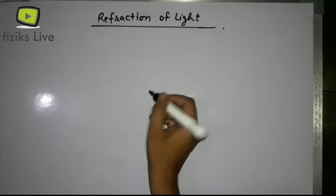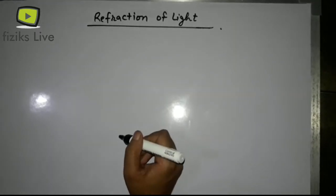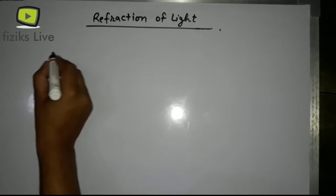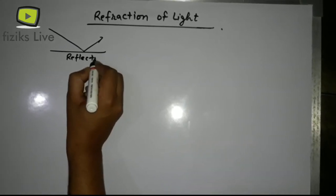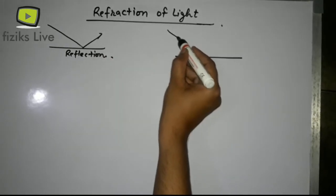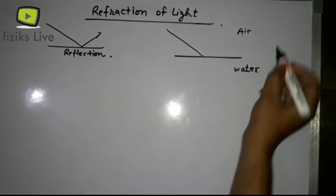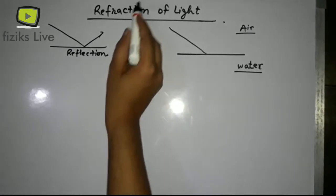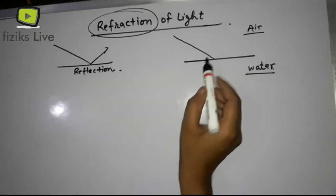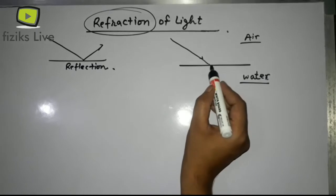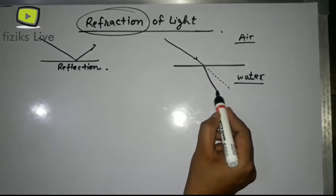Hello friends, this video is about the reflection of light. In our previous chapter we studied reflection. Let me show you the difference: when light strikes on a surface it bounces back — this is called reflection. But when light enters from one medium to another, it disturbs its direction and changes direction — this is refraction.